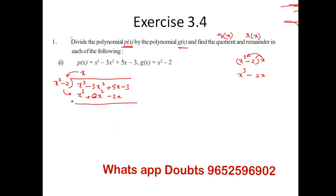When subtracting, X² minus X² cancels out, leaving minus 3X². Subtracting further — minus into minus becomes plus — we get 7X. The constant minus 3 is left out.